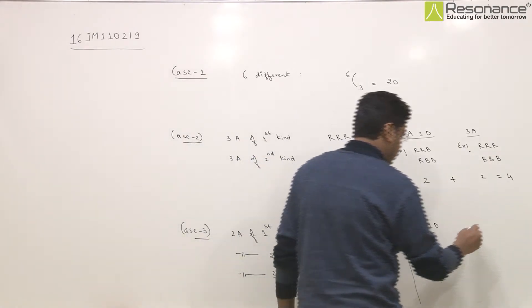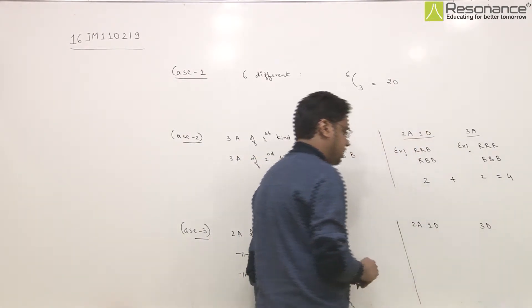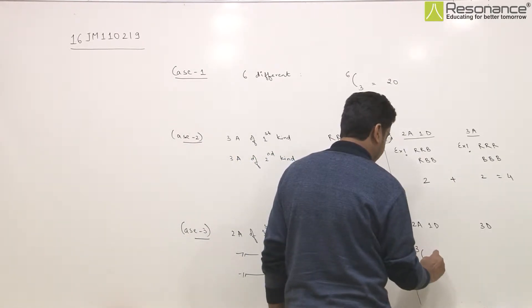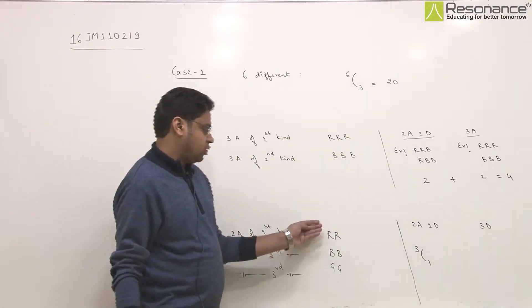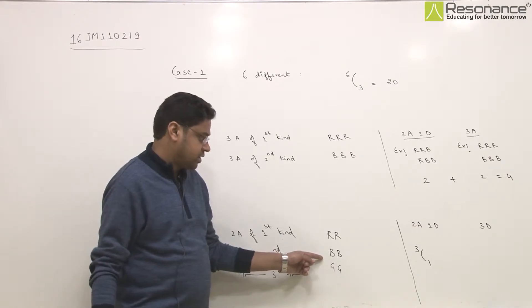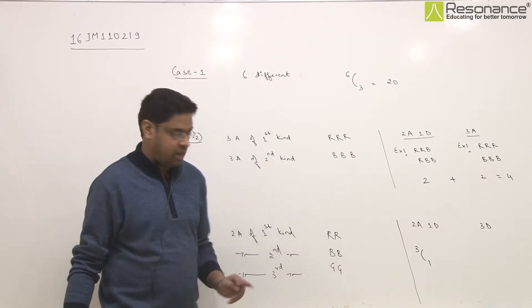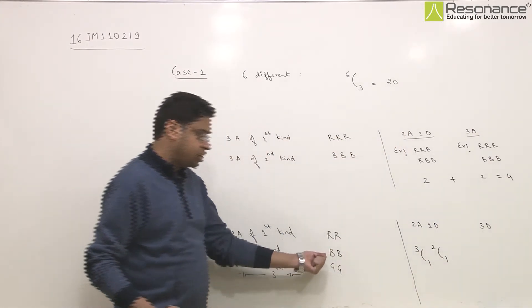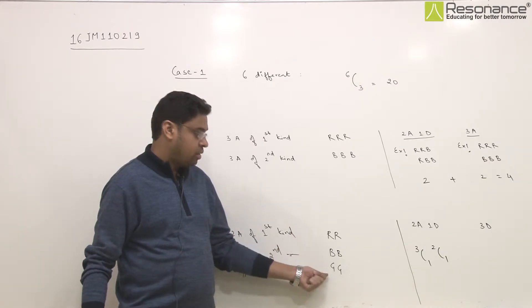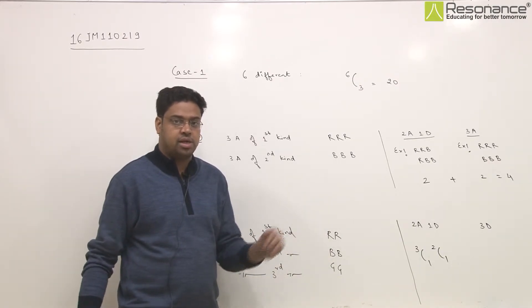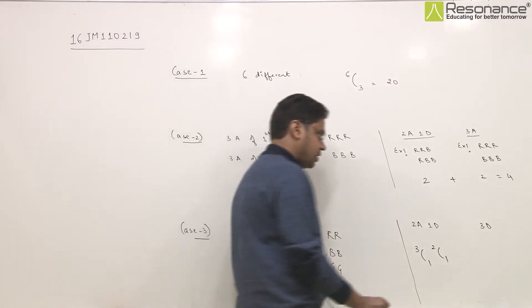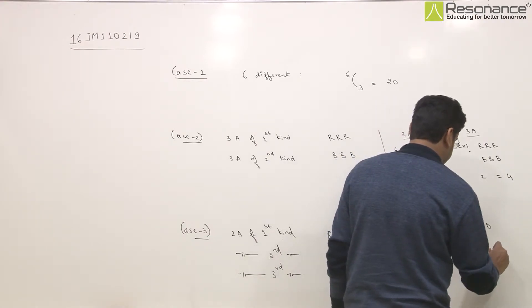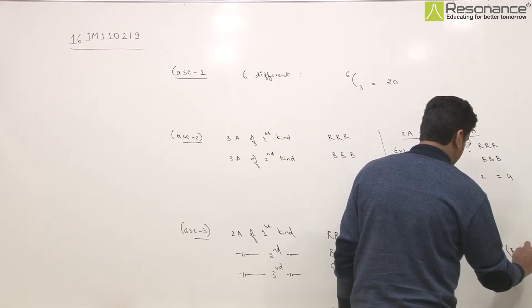So what can happen is two alike and one different. We select one name from three types, say two black balls. From the remaining two types, we select one ball. This gives us 3 times 2 equals 6 ways. Or three different - only one way: red, black, and green.